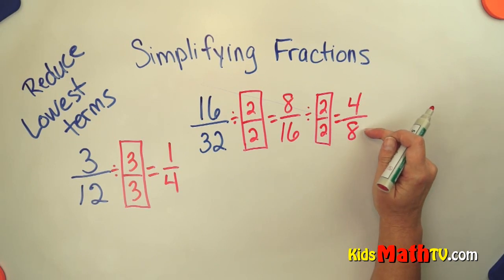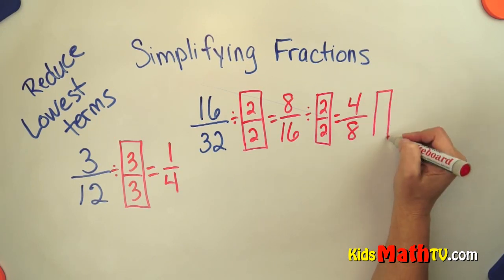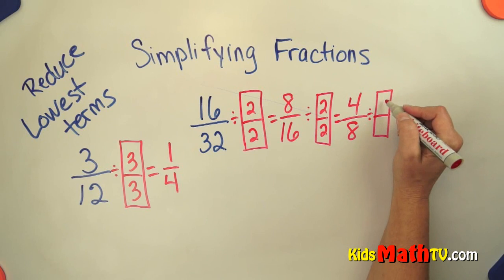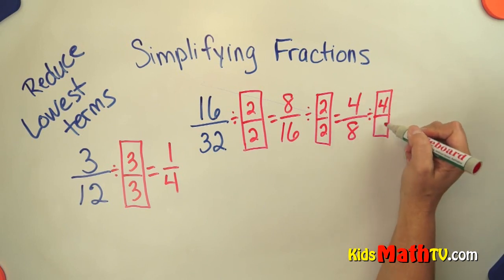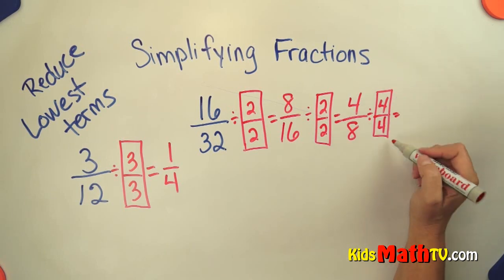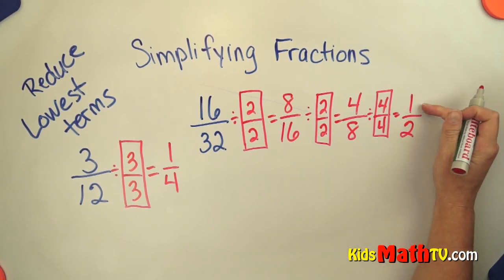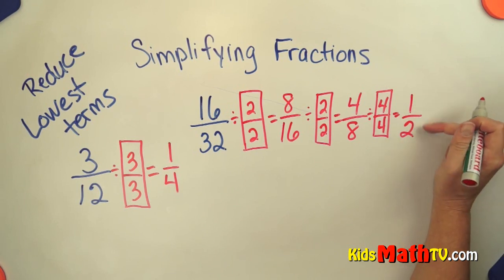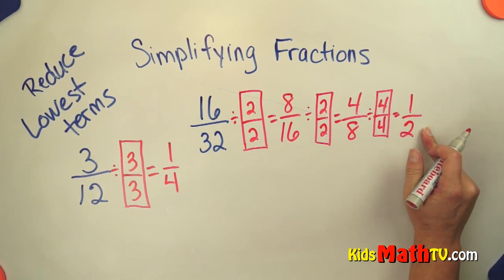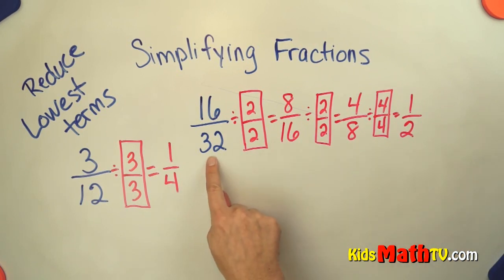Is there a number that will divide both 4 and 8? Yes there is. We can divide by...oh I know that 4 will divide them both. 4 divides both 4 and 8. So I'm dividing by 1, making that 1 into 4 over 4. 4 divided by 4 is 1. 8 divided by 4 is 2. Now I have a 1 as a numerator so I know I can't reduce it any farther. So 16 over 32 reduces down to or simplifies to 1 half.